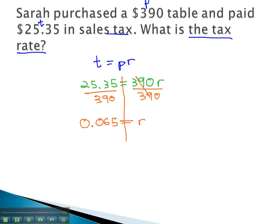Of course, we like to express this as a percentage. So what percentage tax are we paying? We need to change that decimal to a percent, move the decimal point twice, and we have a 6.5% tax for this purchase that Sarah has made.